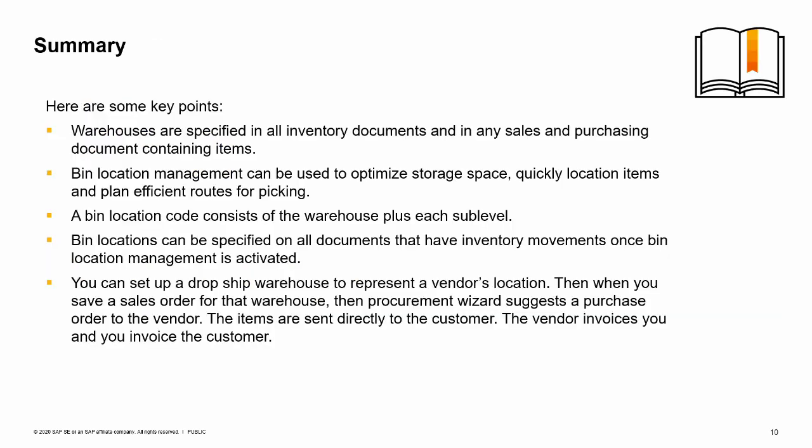Warehouses are specified in all inventory documents and in any sales or purchasing document containing items. Bin location management can help you optimize storage space, quickly locate items, and plan out efficient routes for picking. The bin location code consists of the warehouse code plus each sublevel. Bin locations can be specified on all documents that have inventory movements once bin location management is activated.